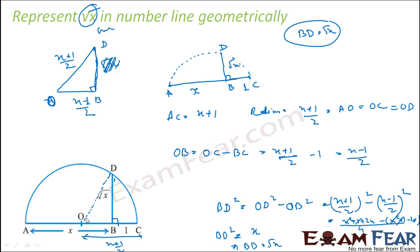Thus, if you want to draw a root x length, you can actually draw a line of x unit, then one unit extra. With that whole length x plus 1, you can actually draw a semicircle with x plus 1 as diameter. And then at this point, you draw a straight line perpendicular to line AC. This line will meet the semicircle at point D. So BD is my root x.